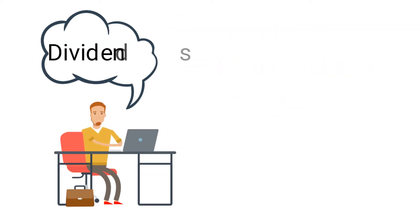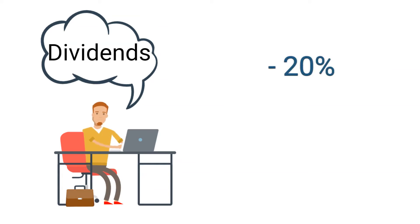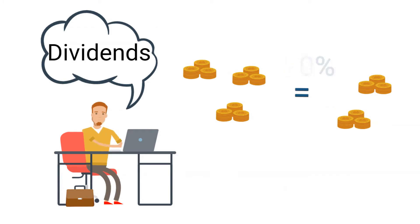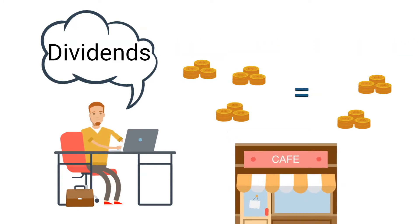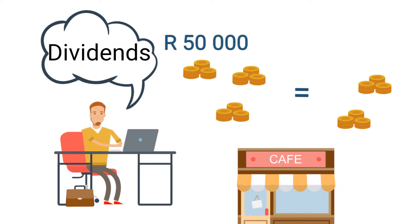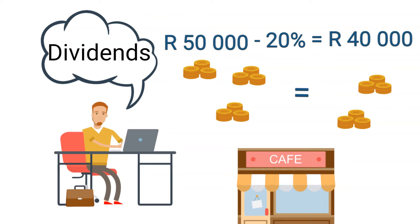We then have dividends withholding tax, which is a 20% tax that is withheld by a regulated intermediary on local dividends declared and accrued or received. For example, if you own shares in company X and the company shows a large profit, that will mean that its preferential shareholders will receive R50,000 in dividends. The company will deduct 20%, and thereafter you will receive 80% of the total amount, which is R40,000.